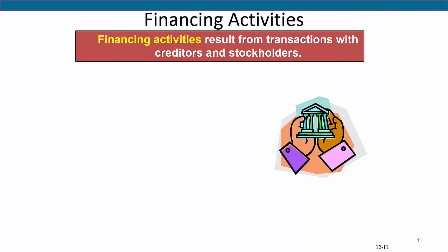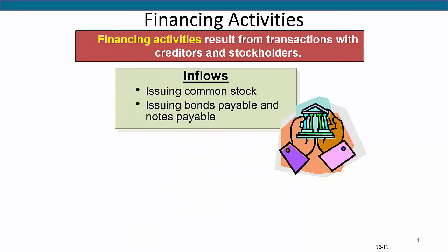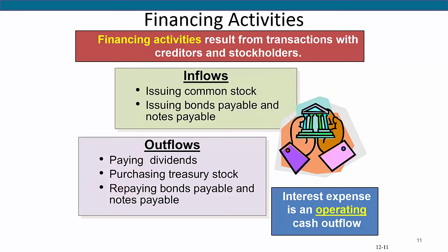Financing activities include those transactions and events that affect long-term liabilities and equity. These activities involve transactions with the company's owners and creditors, as well as borrowing and repaying principal amounts related to both short-term and long-term debt. Examples are: obtaining cash from issuing debt and repaying the amounts borrowed, and receiving cash from or distributing cash to owners, including the issuance of stock and payment of dividends. Because interest expense is reported on the income statement, it is treated as an operating activity, not a financing activity.